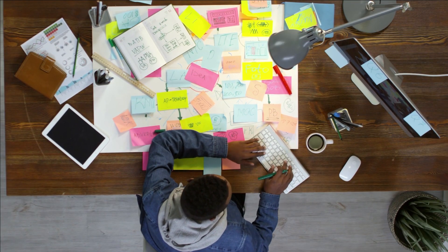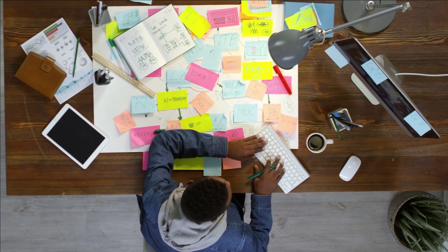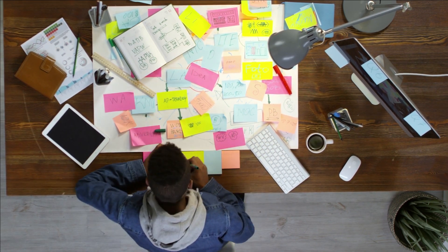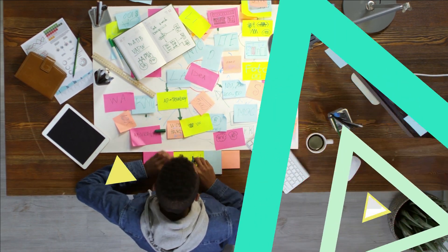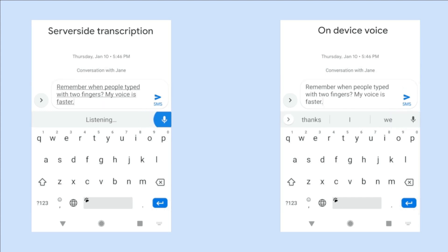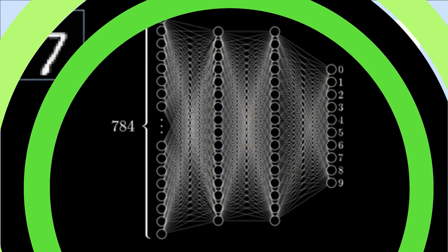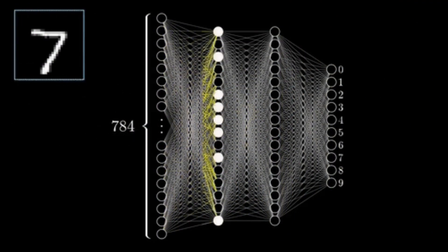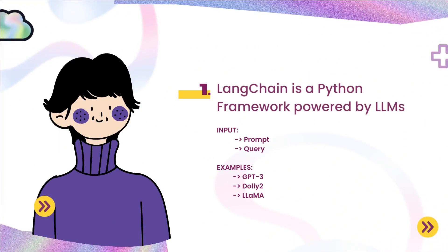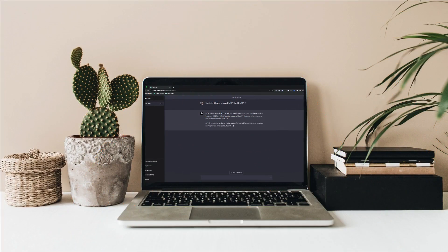LangChain is a Python framework that enables the development of applications powered by language models. Language models are neural networks that can generate natural language text based on some input such as a prompt or a query. Some examples of language models are ChatGPT, Dolly2, and LLAMA.